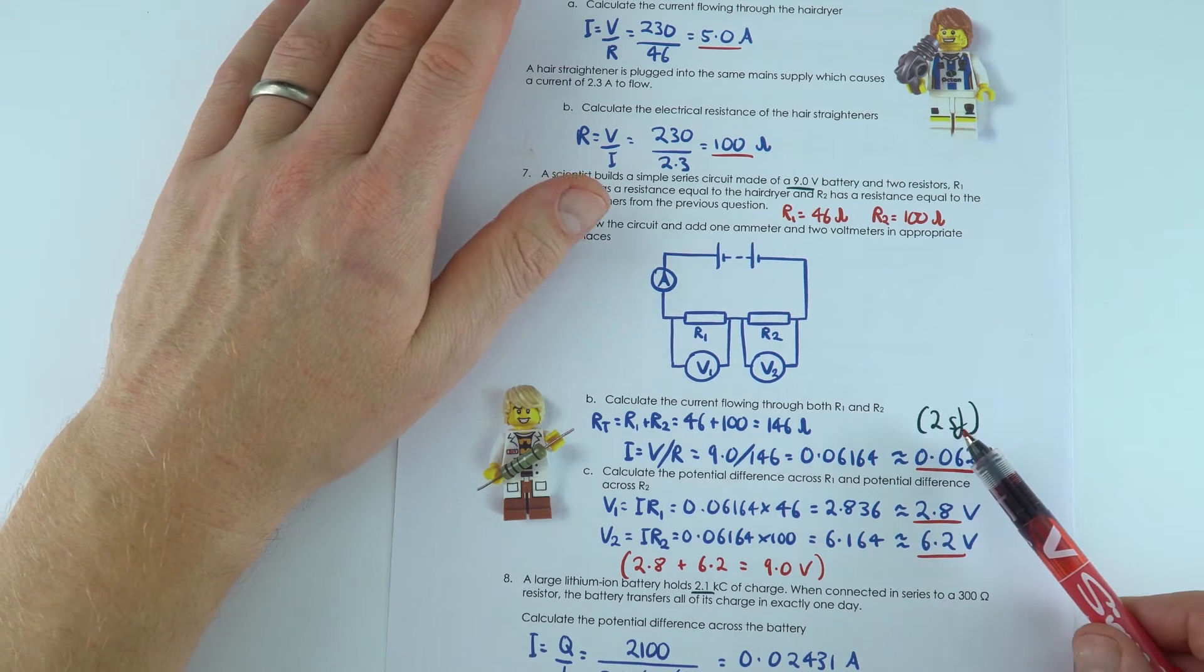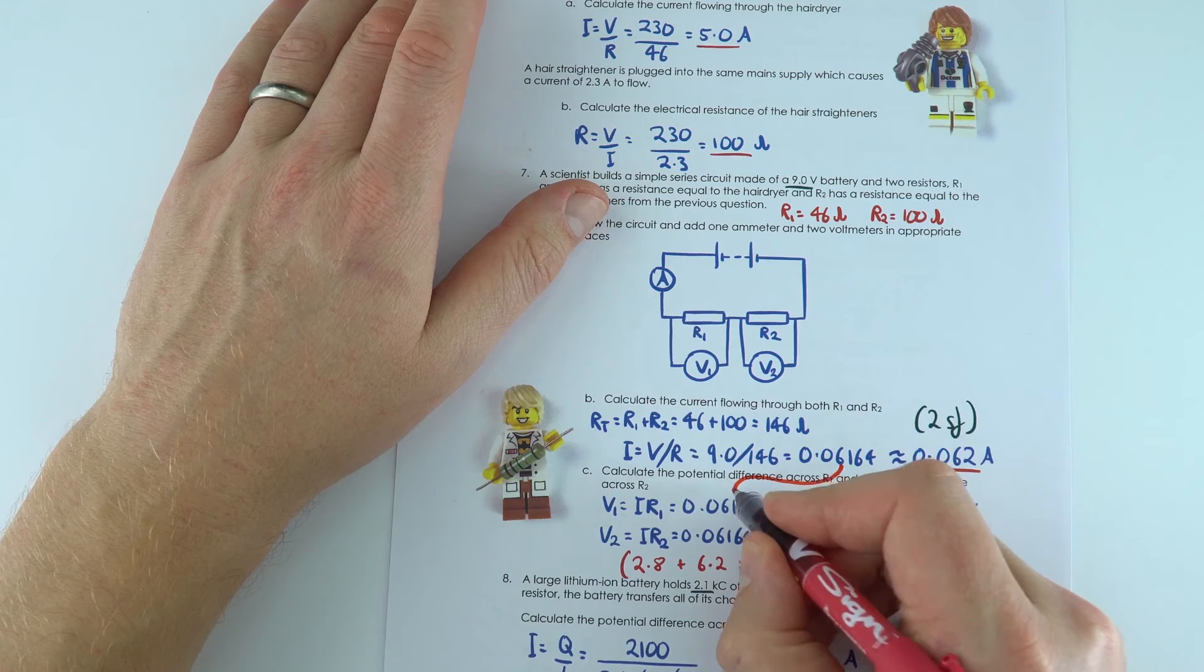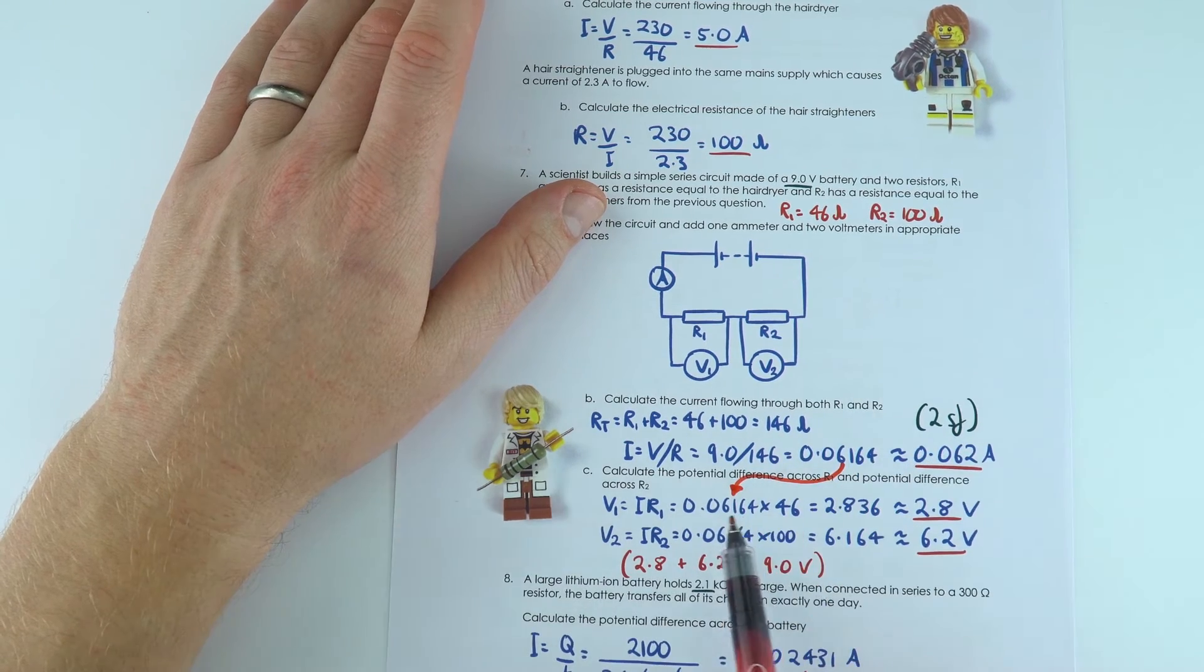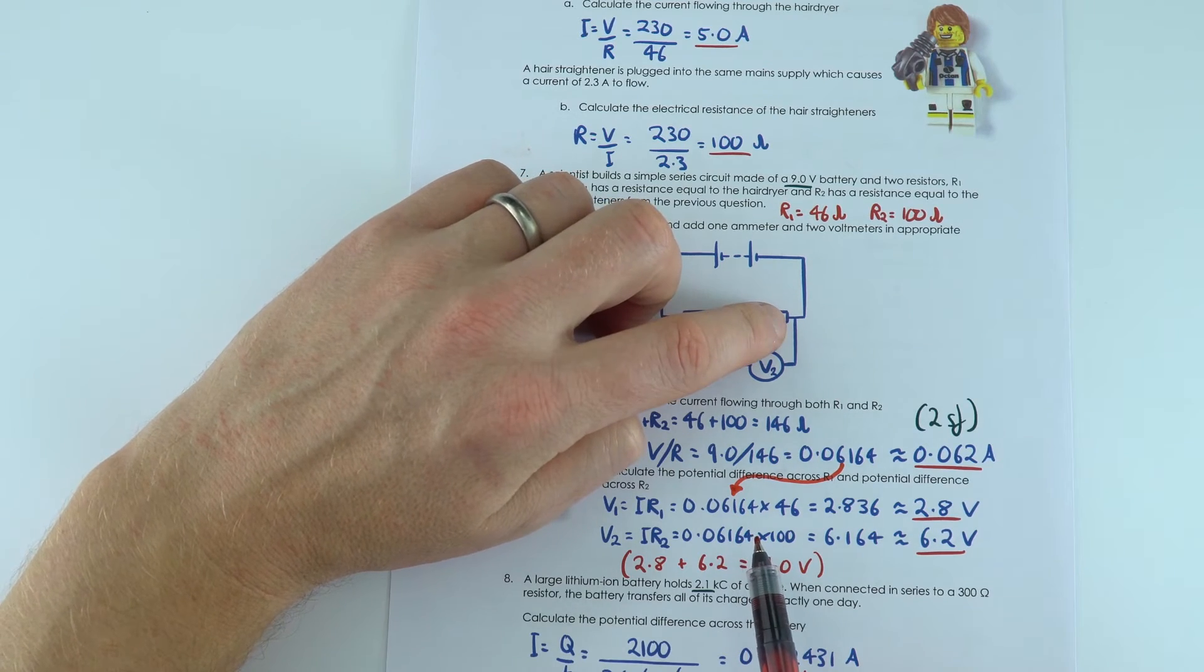And I displayed this final answer to two significant figures, but I used my raw data, the raw calculated value, when I looked at the potential difference across R1 and the potential difference across R2.